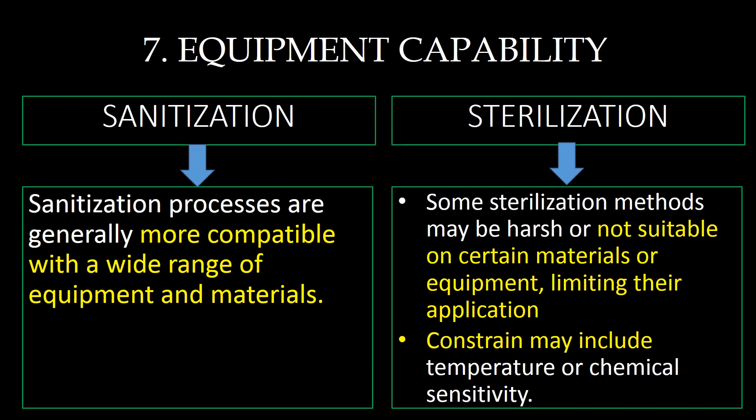The next difference point is equipment capability or compatibility. Sanitization processes are generally more compatible with a wide range of equipment and materials. Whereas some sterilization methods may be harsh or not suitable for certain materials or equipment, limiting their application. Constraints may include temperature or chemical sensitivity.